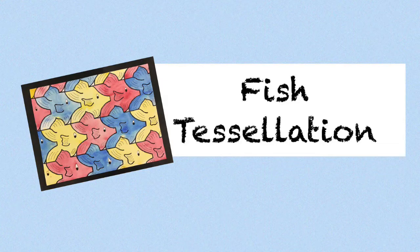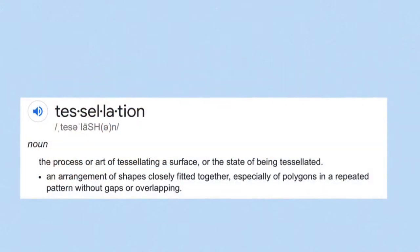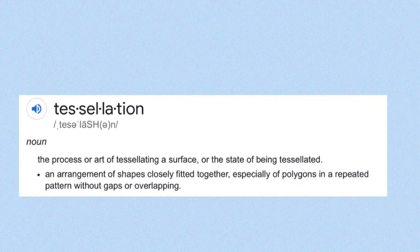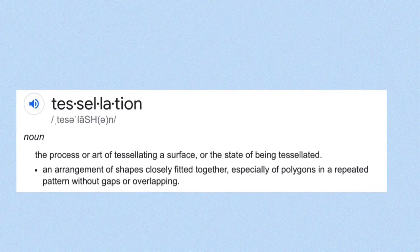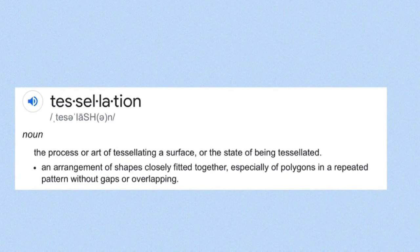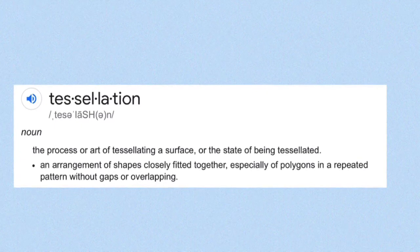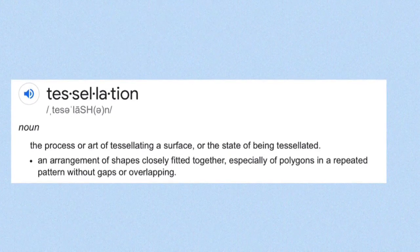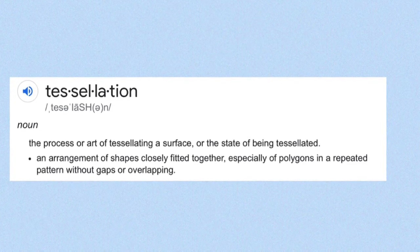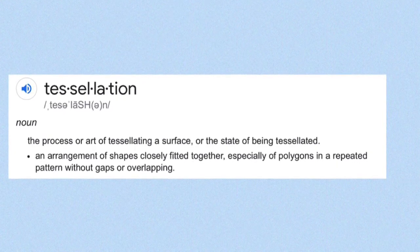Fish tessellation. We're going to make a tessellation today. The definition of a tessellation is the process or art of tessellating a surface. That means it's an arrangement of shapes closely fitted together, especially polygons in a repeated pattern without any gaps or overlapping.